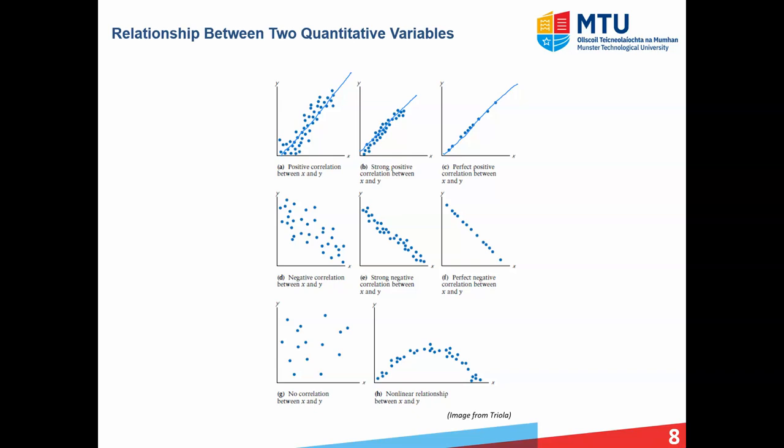These first six examples all fit with linear relationships — straight lines. But there are other types. For example, graph H shows a non-linear relationship: a straight line doesn't explain the data well, but that doesn't mean there's no relationship. In this case there's a non-linear relationship — more specifically, we could fit a quadratic curve to that data. So just because there isn't a linear relationship doesn't mean there's no relationship at all. And of course, graph G shows data where there is no correlation or relationship at all — the data is just randomly scattered around and no straight line or curve can be fit.